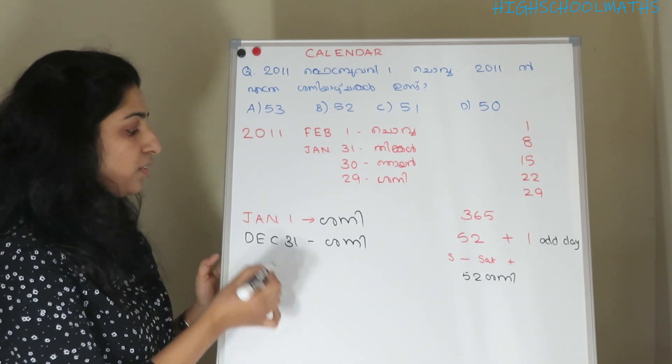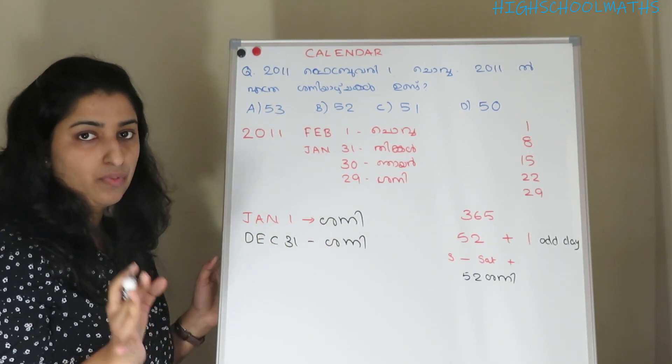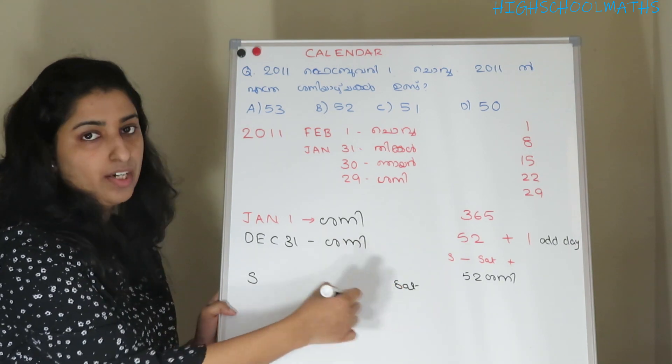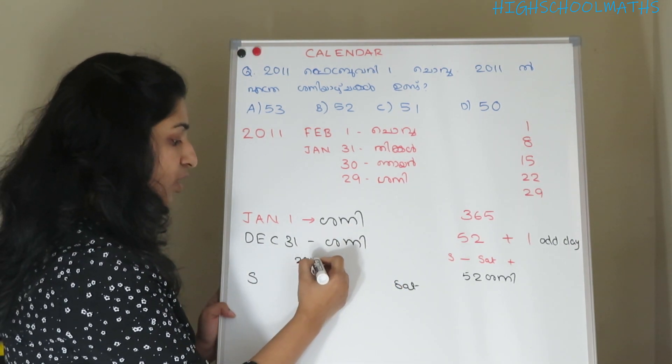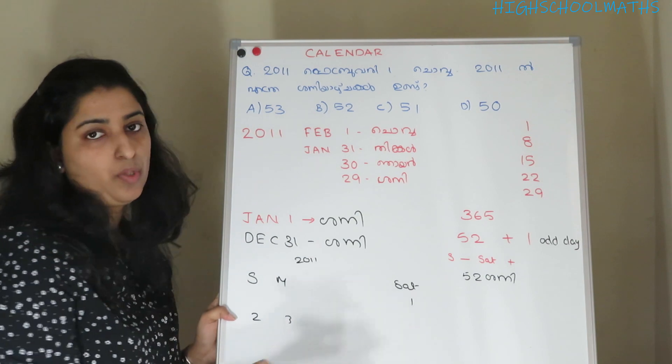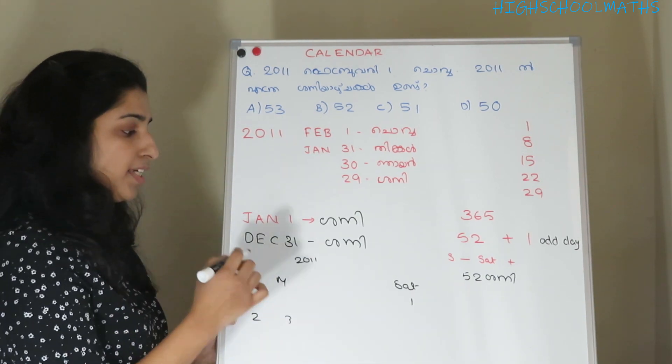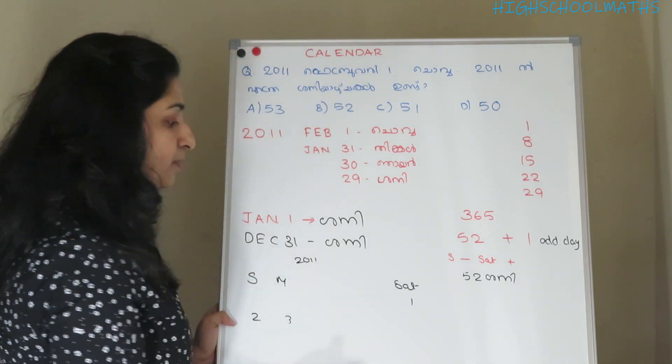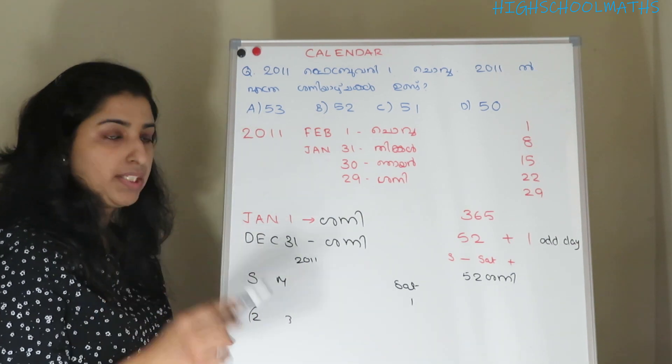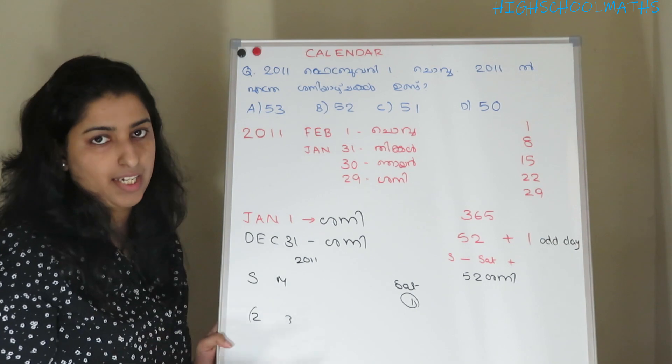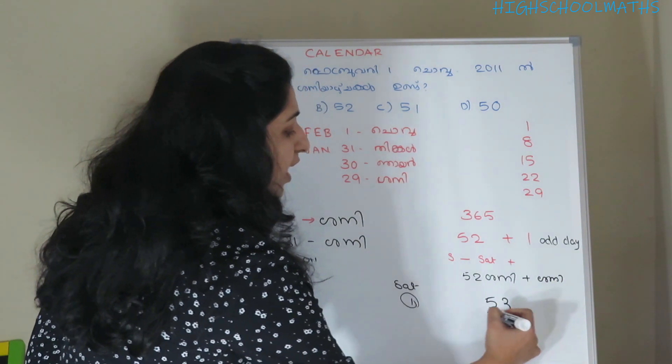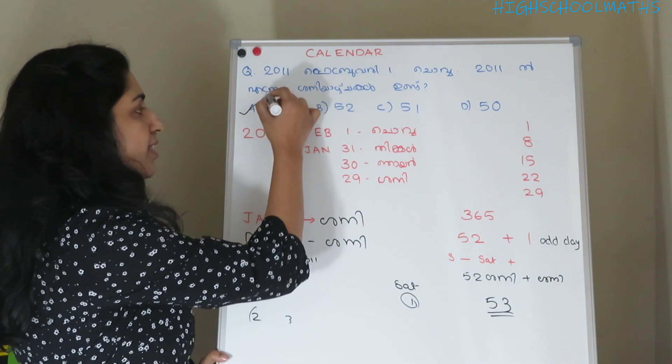If we work backwards, if February 1st is a Sunday, then January 29th would be Saturday. We will get 29 days in the week. When you calculate for 50 Sundays in the year, you will get 50. This is option D and the answer is 50.